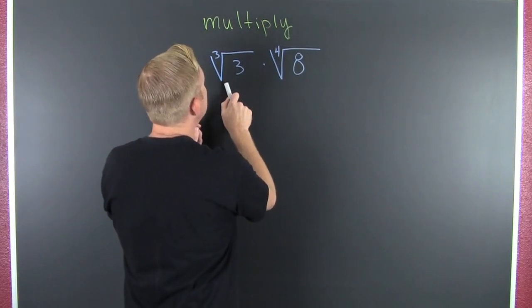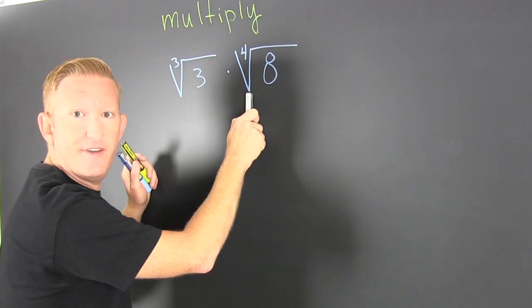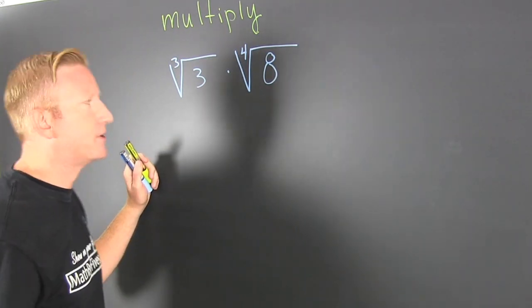What? I need to multiply the third root of three by the fourth root of eight. Wait, those are unlike radicals.